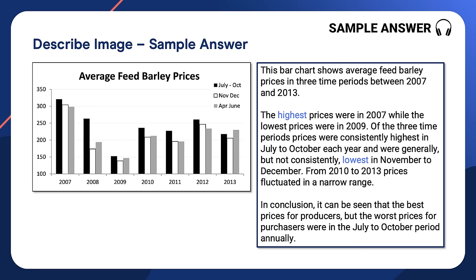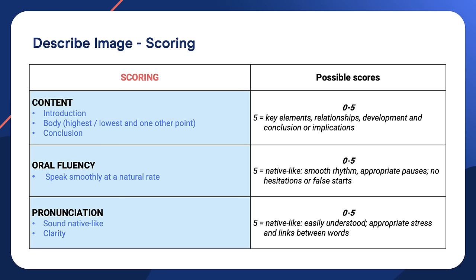This bar chart shows average feed barley prices in three time periods between 2007 and 2013. The highest prices were in 2007, while the lowest prices were in 2009. Of the three time periods, prices were consistently highest in July to October each year, and were generally, but not consistently, lowest in November to December. From 2010 to 2013, prices fluctuated in a narrow range. In conclusion, it can be seen that the best prices for producers, but the worst prices for purchasers, were in the July to October period annually.